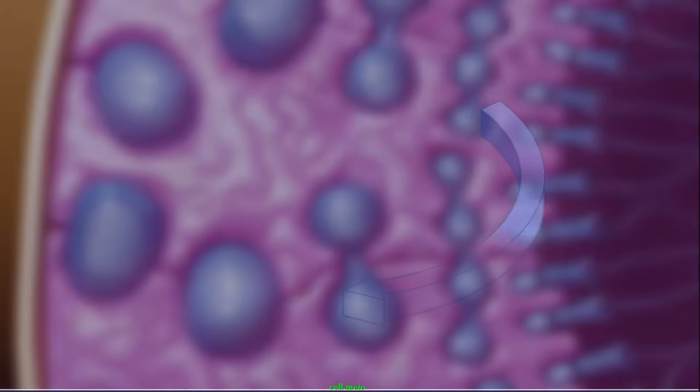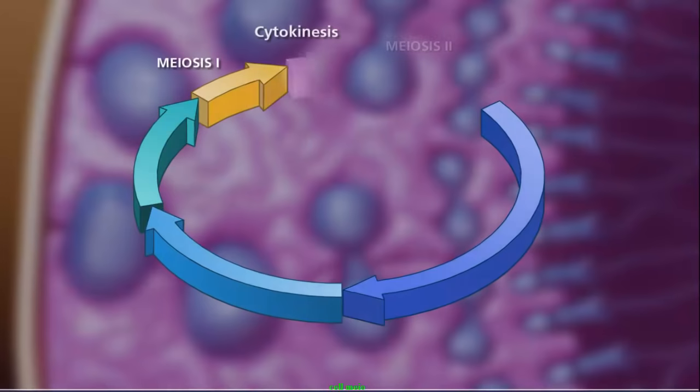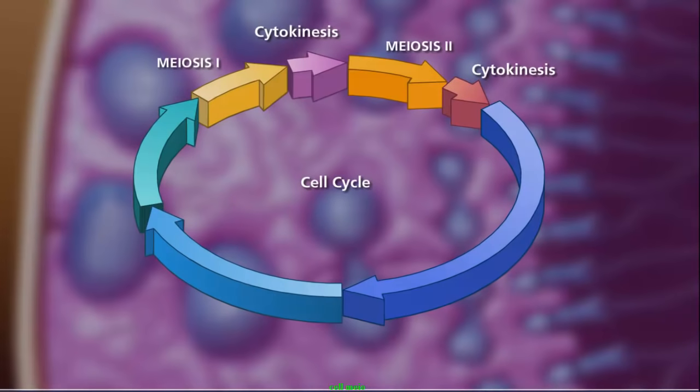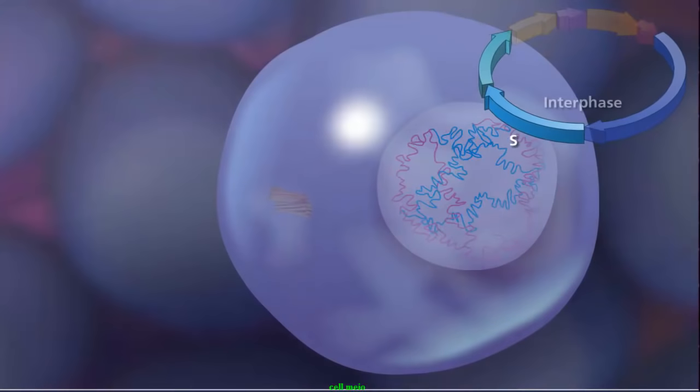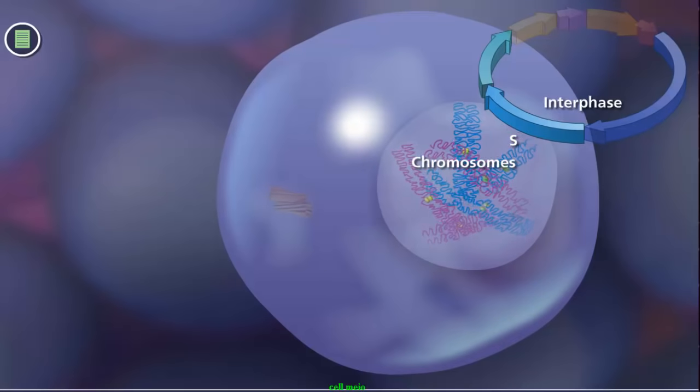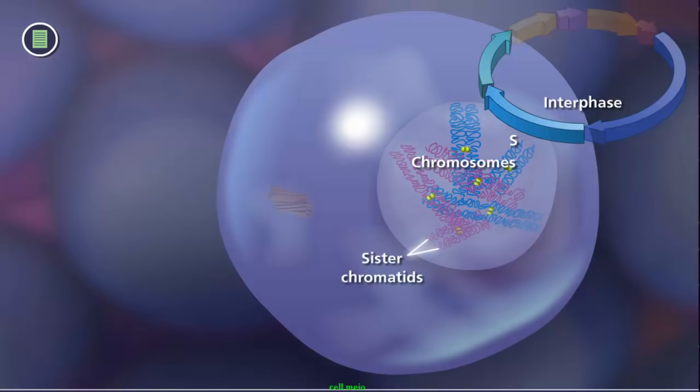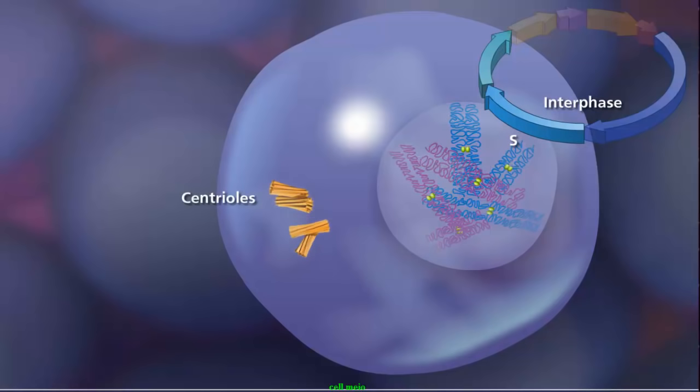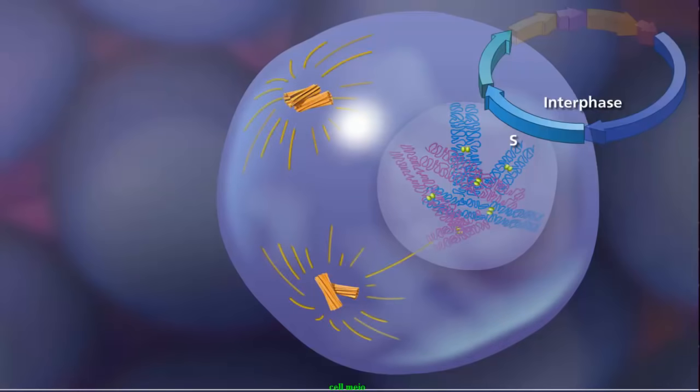As in mitosis, meiosis begins after a cell has successfully completed the G1, S, and G2 stages of interphase. During the S phase of interphase, the DNA is replicated, producing two copies of each chromosome called sister chromatids. The paired centrioles in the cytoplasm duplicate and begin extending microtubules that will form the meiotic spindle.